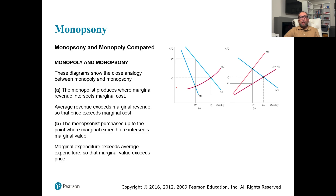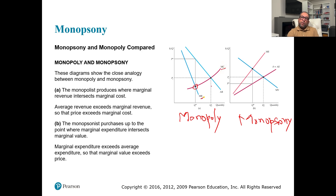Comparing monopsonist and monopoly: a monopolist determines quantity by equating marginal cost with marginal revenue, then finds price using the average revenue (demand) curve. On the other hand, a monopsonist equates marginal expenditure with marginal value to find quantity, then determines the price using the average expenditure curve. So the monopsonist finds price from the average expenditure side.